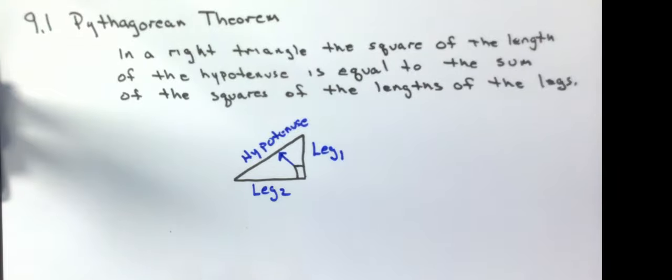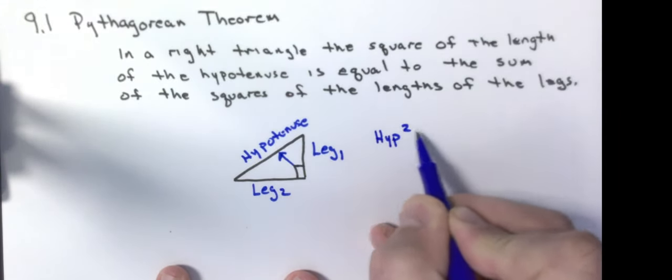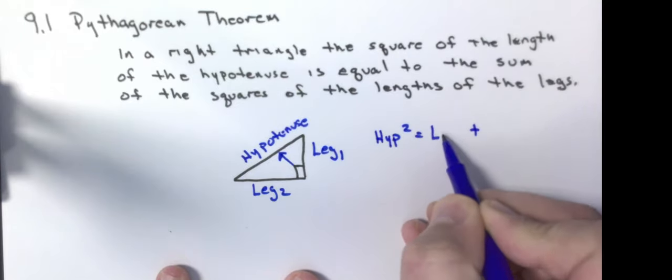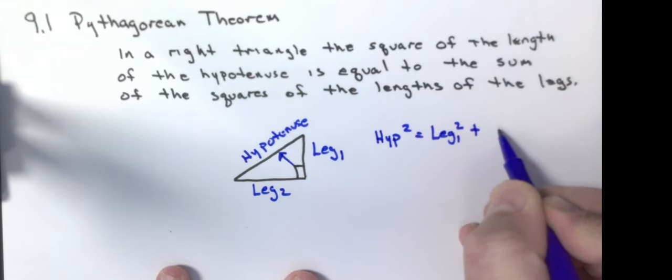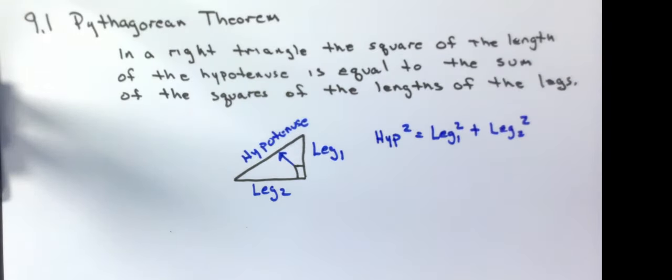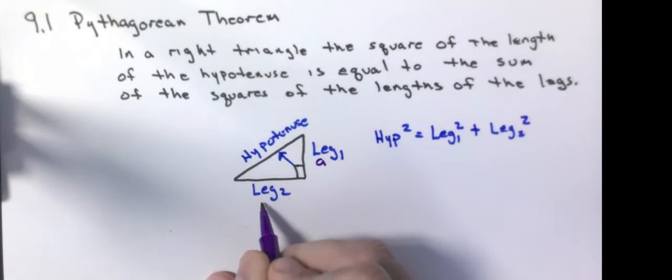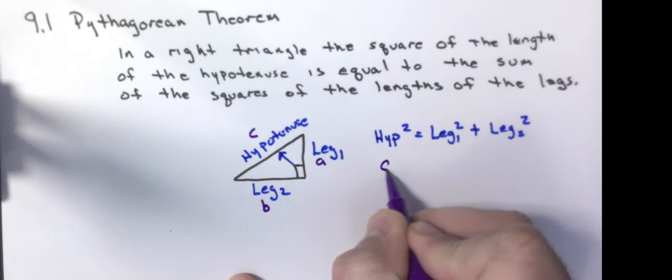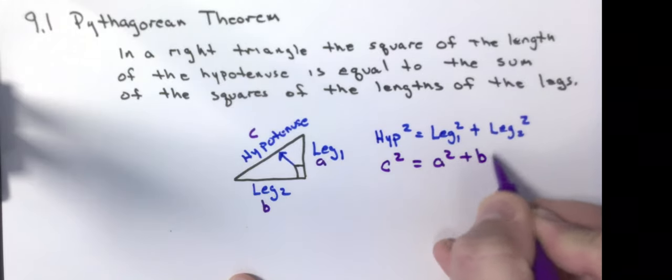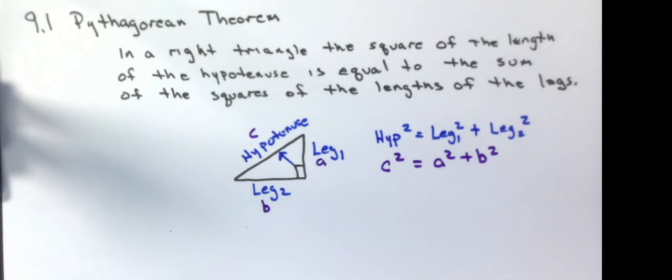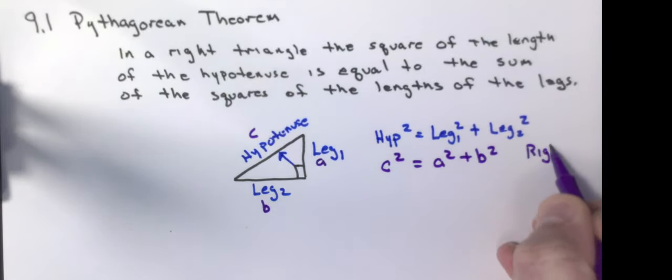And what that theorem is telling me is that the length of the hypotenuse squared is equal to the sum of the squares of the lengths of the legs. And the way that if we were using letters, I'll call this one A, this one B, and this one C, we would say that C squared is equal to A squared plus B squared. And I know in elementary school, the first time you saw it, you probably did A squared plus B squared equals C squared, but this is very important. You put the C squared on the left, because the other theorems that you have in this section, if you have this relationship, you have a right triangle.